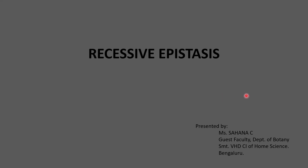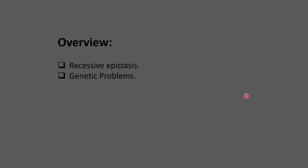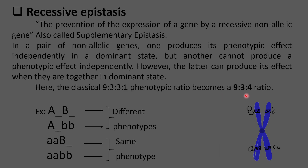Hello, this is Sahana here to present recessive epistasis. The prevention of the expression of a gene by a recessive non-allelic gene is called recessive epistasis. It is just the opposite of dominant epistasis.